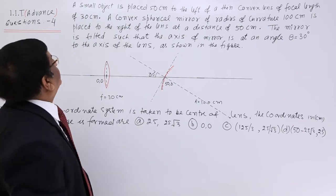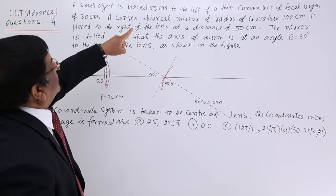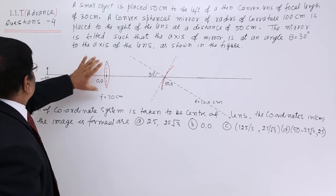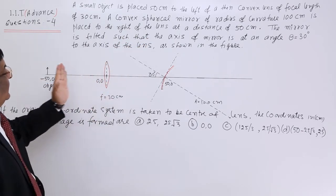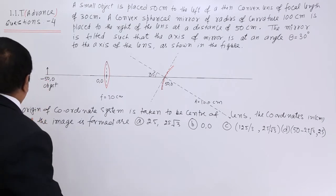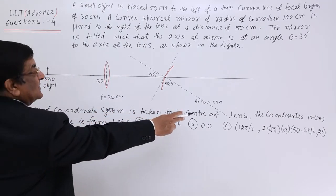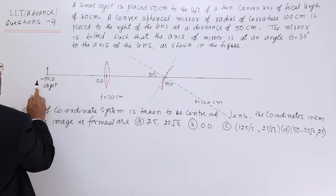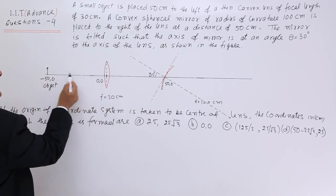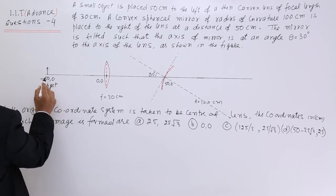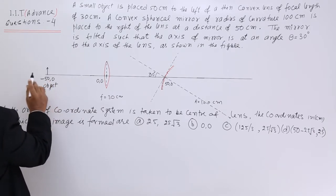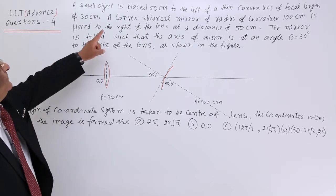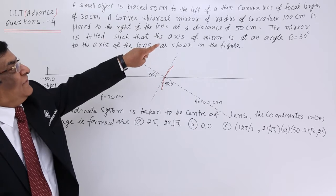There is a question from optics. A small object is placed 50 centimeters to the left of a thin convex lens. The origin of the coordinate system is taken to be the center of the lens. To the left is negative on the x-axis, so the coordinate of this object is minus 50, zero.